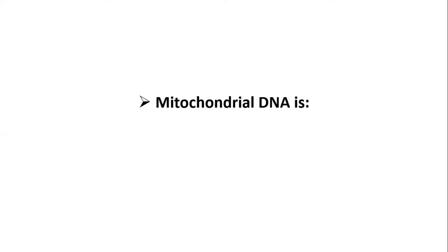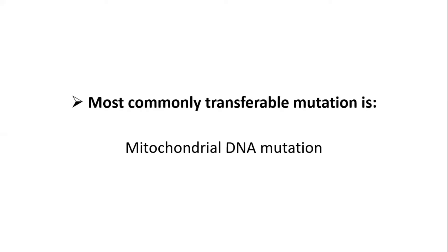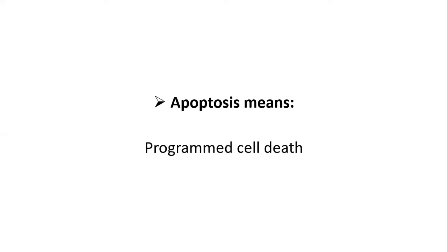Halophytes are plants that grow in high saline conditions. Mitochondrial DNA is circular and has 16,500 base pairs. Bacteria do not undergo splicing. Most commonly transferable mutation is mitochondrial DNA mutation. DNA replication in eukaryotes occurs in S phase. Apoptosis means programmed cell death.